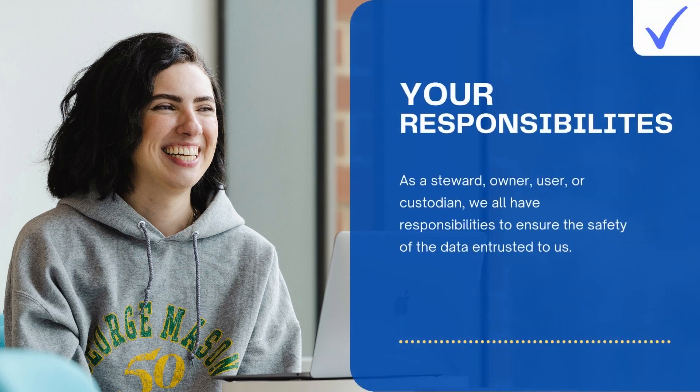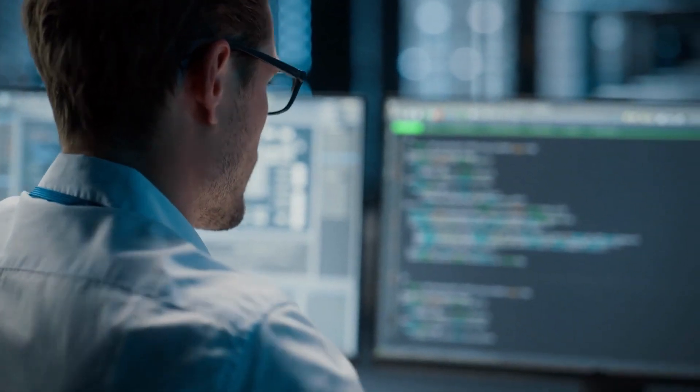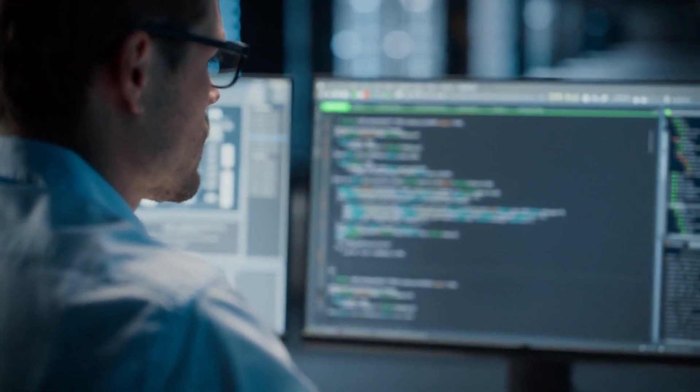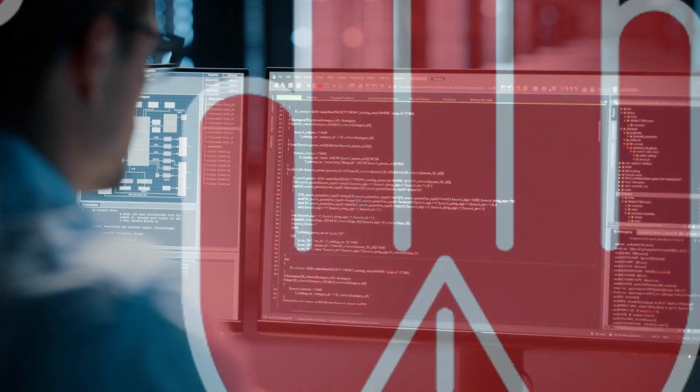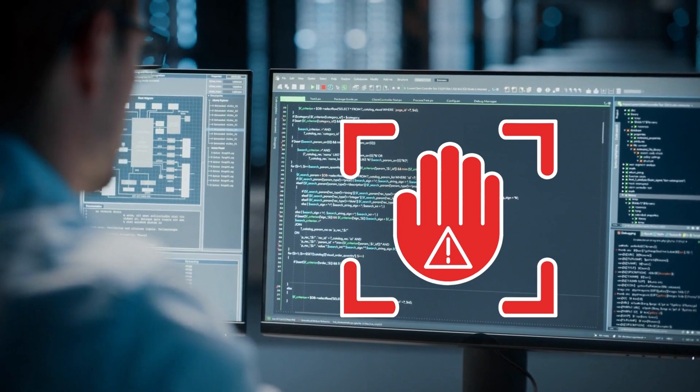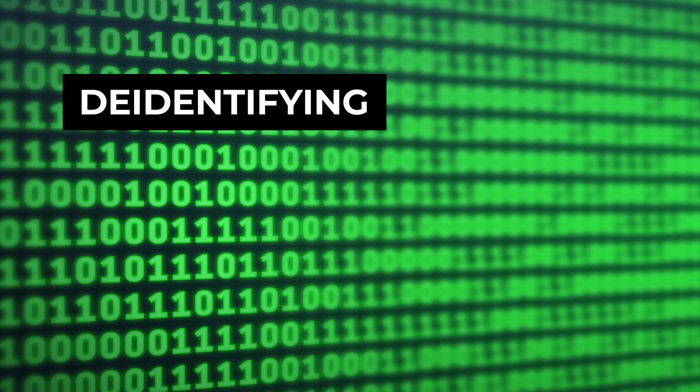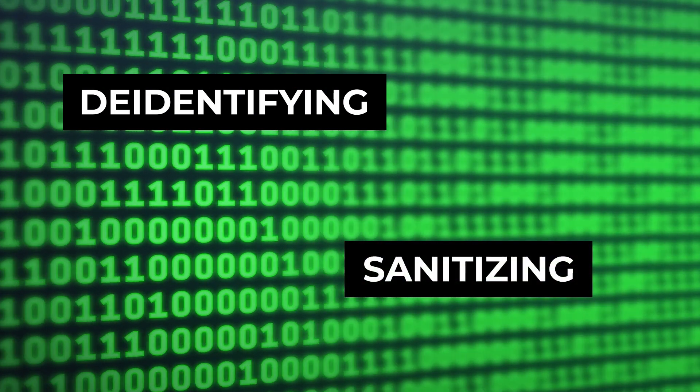Now that we understand the different classifications of data at Mason, let's talk about our responsibilities. As a steward, owner, user, or custodian of the data, you play a crucial role in maintaining its security. If you don't have a business requirement to handle highly sensitive or restricted data, you should not have access to it. If you come across such data without a valid justification, talk to your direct supervisor or the information security team. Methods such as de-identifying or sanitizing the data can be used to reduce risk.